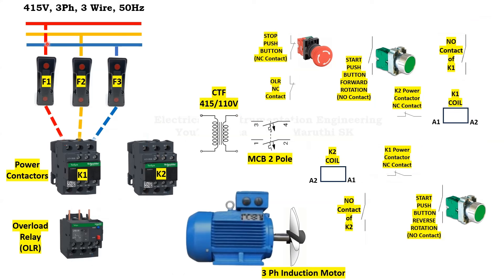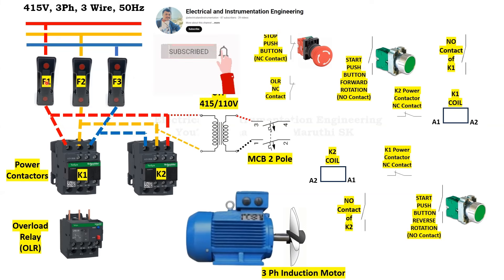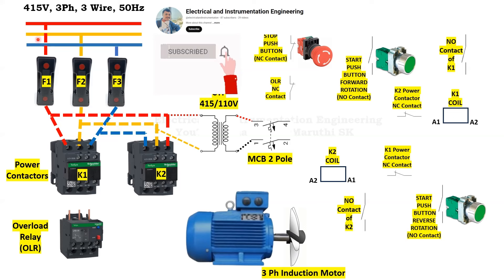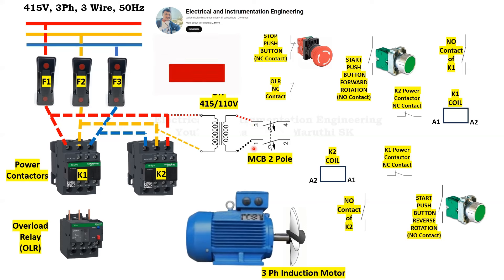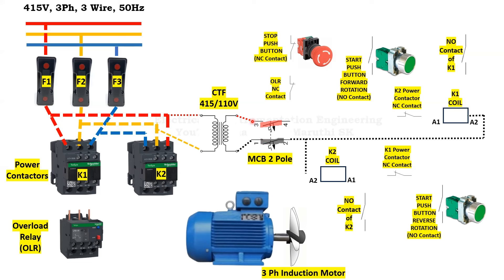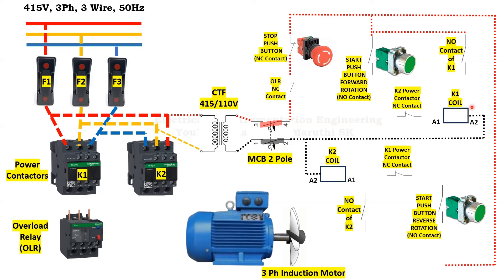Now we will learn the working animation of this power and control circuit. From the bus bar, the supply is extended through fuses up to the power contactors' incoming terminals — K1 and K2. R phase, Y phase, B phase are extended through fuses up to both power contactors' incoming terminals. The dotted lines from R phase and Y phase are connected to the primary side of the control transformer, which provides output voltage to the MCB incoming terminals. The 2-pole MCB receives 110V phase and neutral.